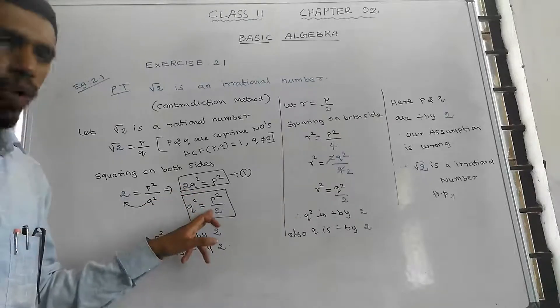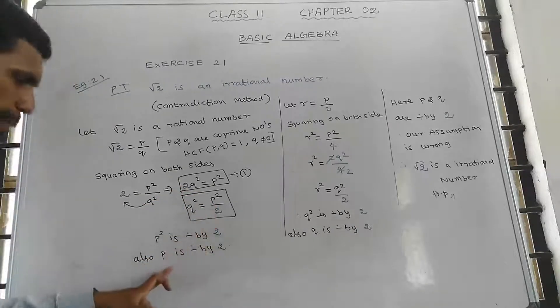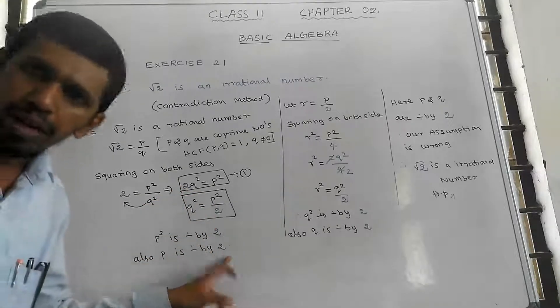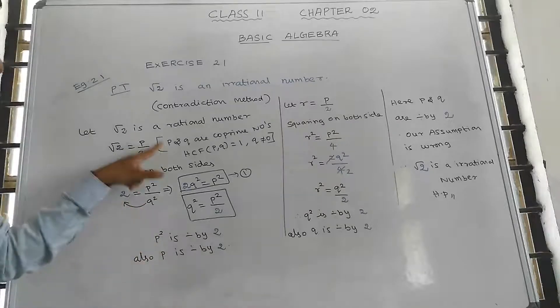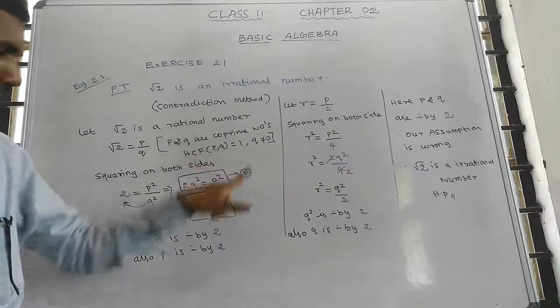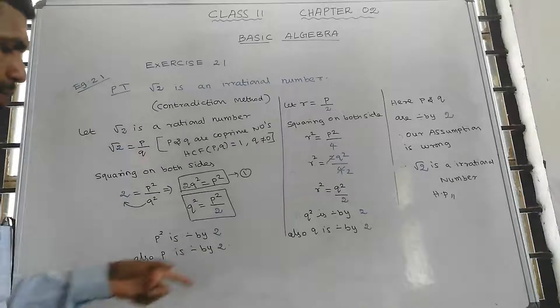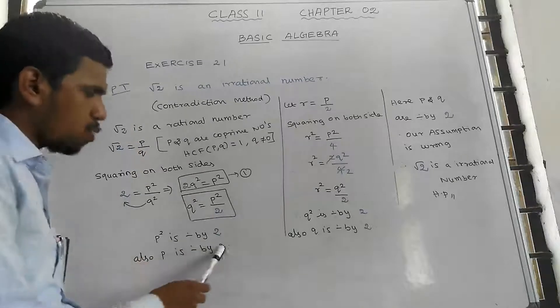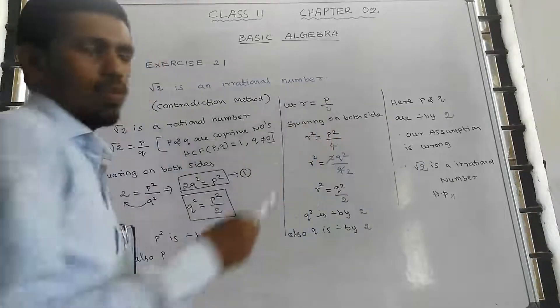Since 2q squared equals p squared, p is divisible by 2, so we can write p equals 2r. Substituting back, we get 2r divided by 2, confirming p equals 2r.